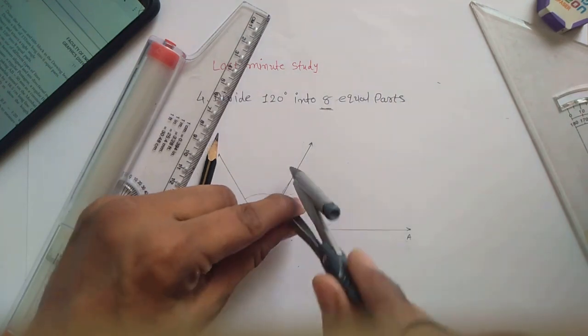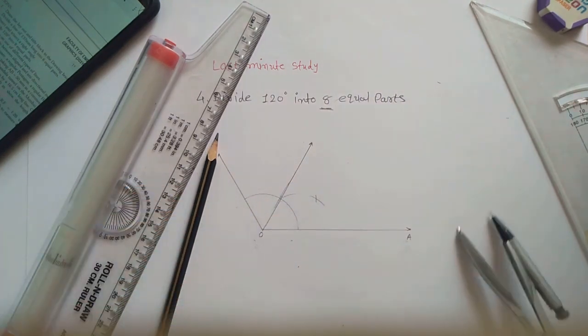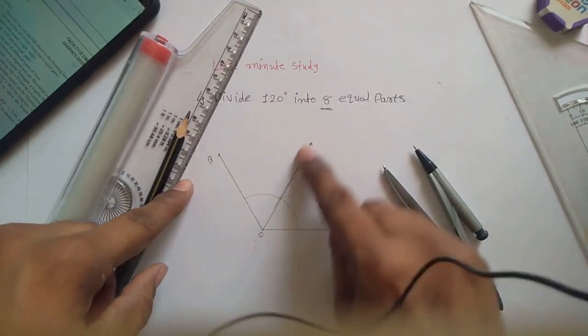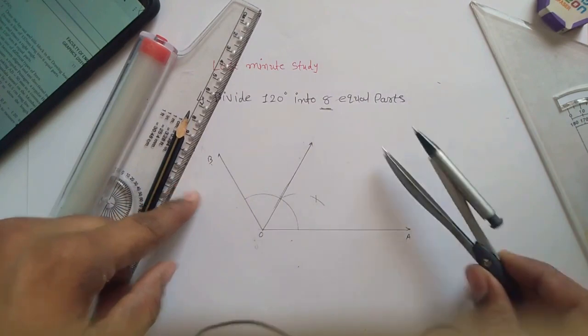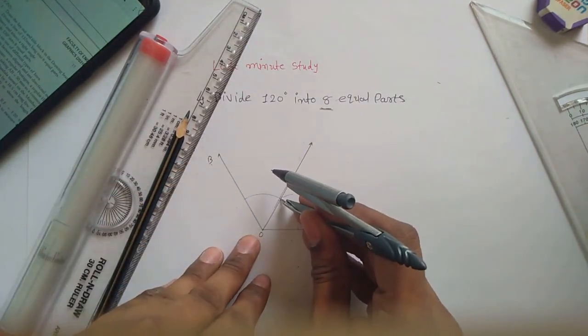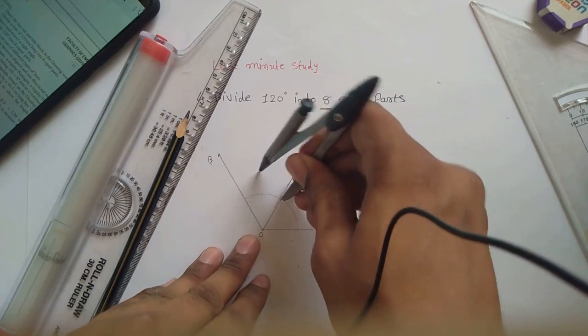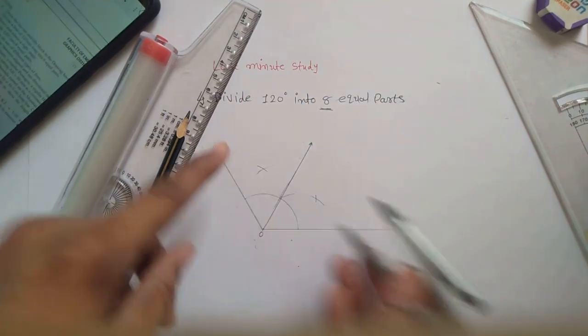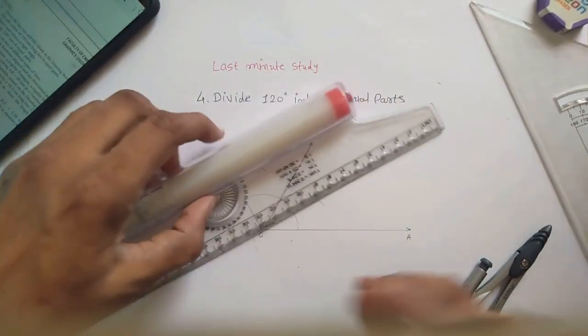The same way, put the pointer over here and make an arc outside the curve. Again, you have to consider this part individually and divide this into two equal parts with the same method which you have followed over here, and draw the divisions.